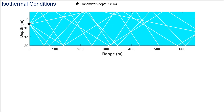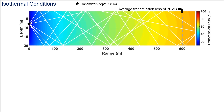In isothermal conditions, sound signals travel in a straight line without any refraction due to the absence of a sound speed gradient, and can reflect off upper and lower boundaries. Eventually, the sound signal will be absorbed by obstacles and power loss will occur through spreading with distance. This color map shows the estimated power loss of an acoustic transmission along its path to the receiver in the absence of refraction. In this scenario, we see an average transmission loss of 70 decibels by the time the signal reaches 600 meters from the source.